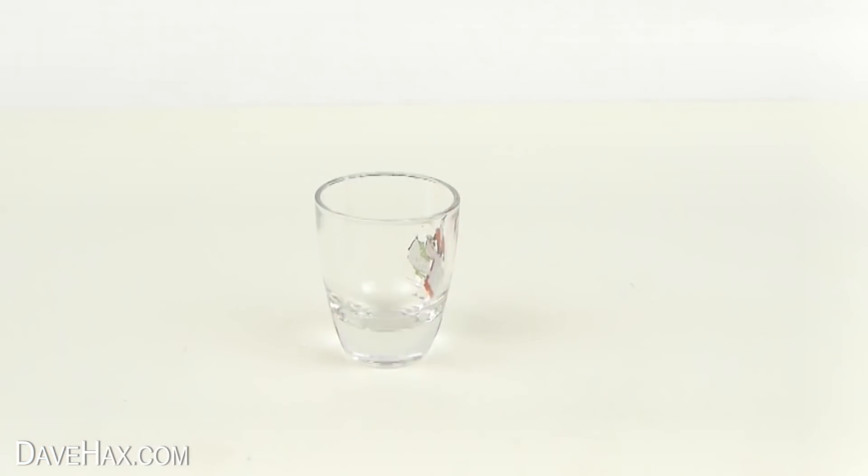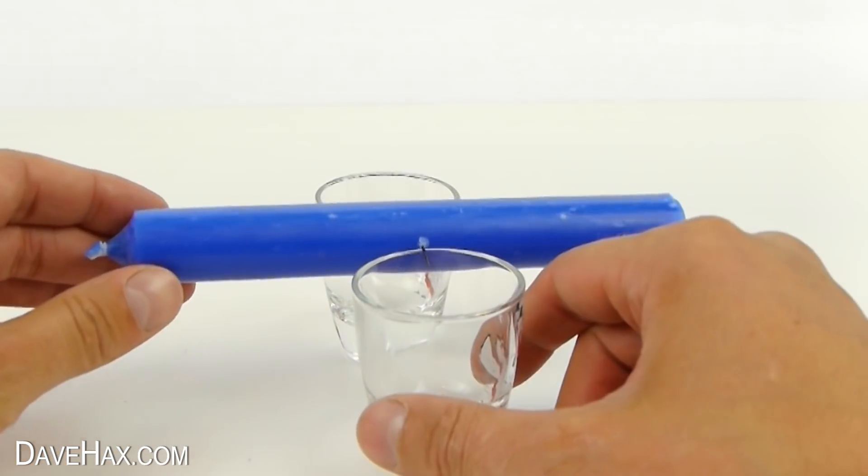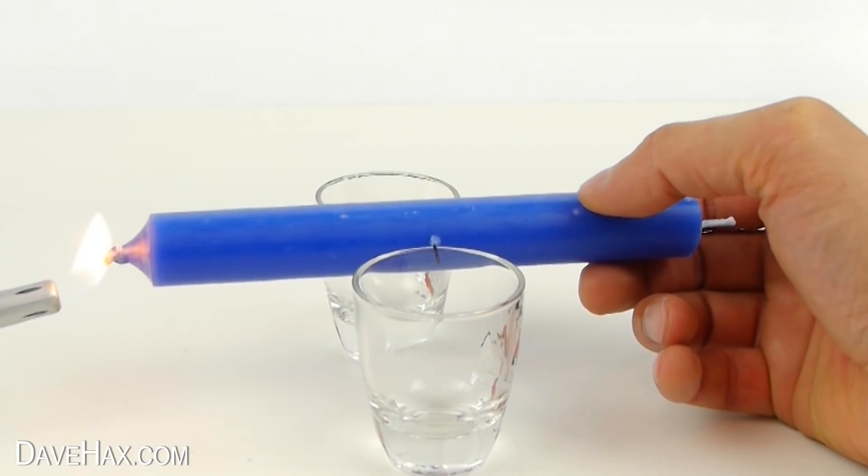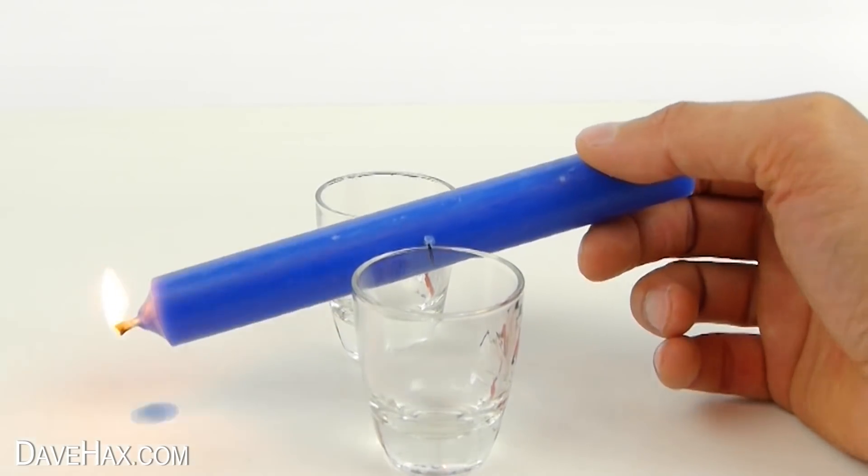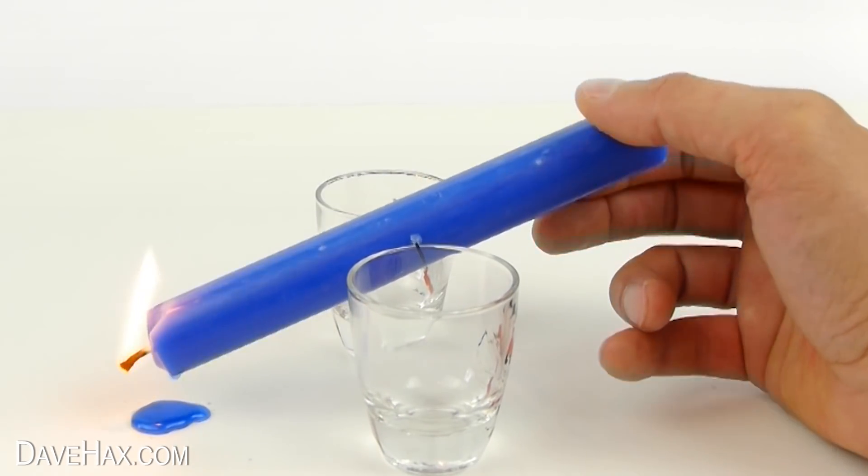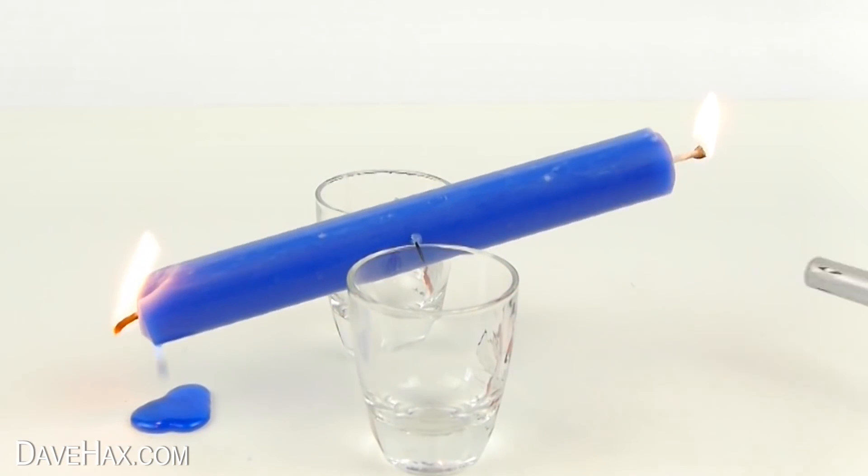Next, take a couple of small glasses, and balance the candle in between them, like this. You'll probably find the candle falls to one side, because it's not yet perfectly balanced. So lift up the heavy end, and light that side of the candle. As it burns, and the wax drips, it should become lighter, and start to reach balancing point. And when it does, use your lighter to light the other side.